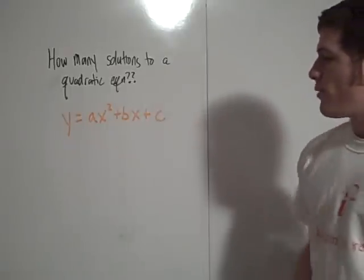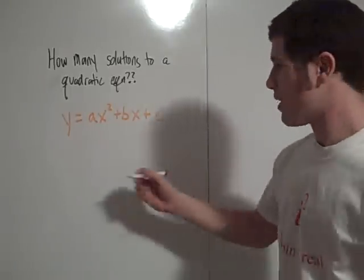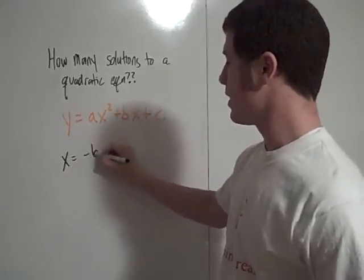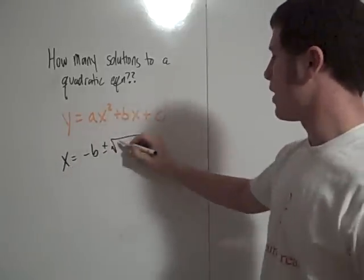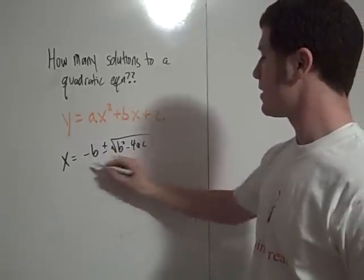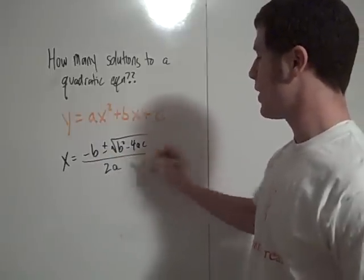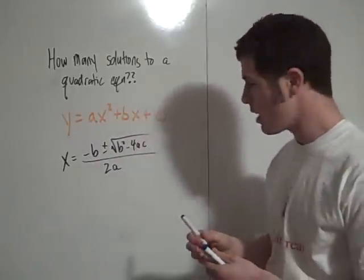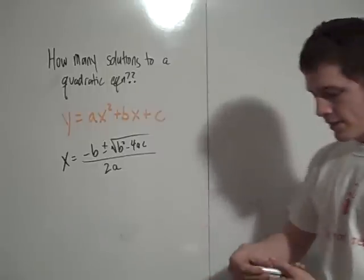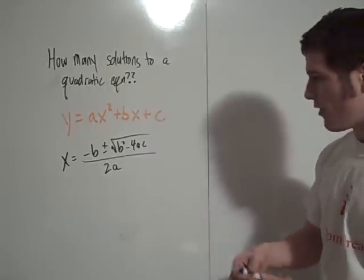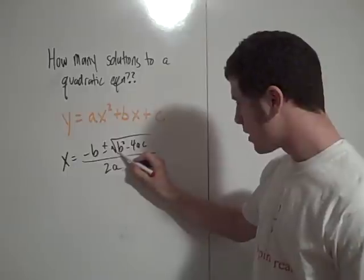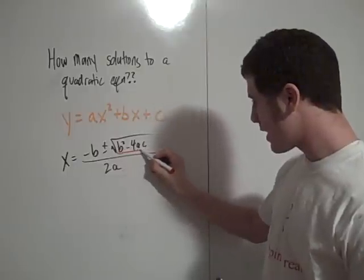If you think about the quadratic formula — x equals negative b plus or minus the square root of b squared minus 4ac, all over 2a — how many roots there are to the equation depends on this value right here, the value under the square root.